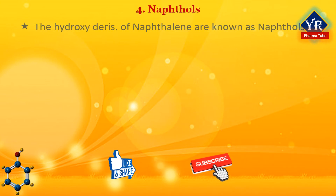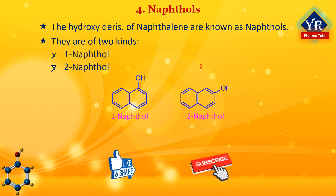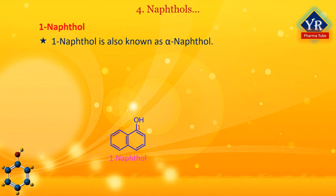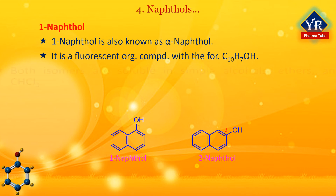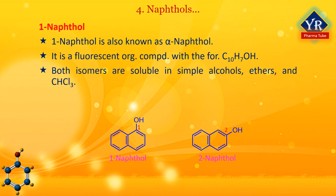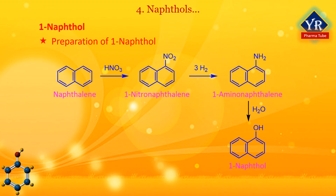Coming to naphthols. The hydroxy derivatives of naphthalene are known as naphthols, and they are of two kinds: 1-naphthol and 2-naphthol. 1-naphthol is also known as alpha-naphthol. It is a fluorescent organic compound with the formula C10H7OH. It is a white solid and an isomer of 2-naphthol, differing by the location of the hydroxyl group on the naphthalene ring. The naphthols are naphthalene homologues of phenol with the hydroxyl group being more reactive than in phenols. Both isomers are soluble in simple alcohols, ethers and chloroform. 1-naphthol is prepared by two main routes: naphthalene is nitrated to give 1-nitronaphthalene, which is hydrogenated to the amine followed by hydrolysis.